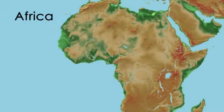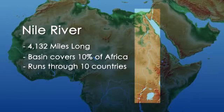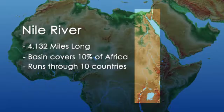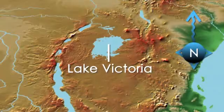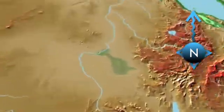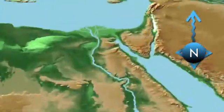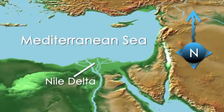Although there's a little disagreement among geographers, it's generally accepted that the world's longest river is Egypt's Nile River, which stretches over 4,000 miles from Lake Victoria in Central Africa to the Mediterranean Sea.